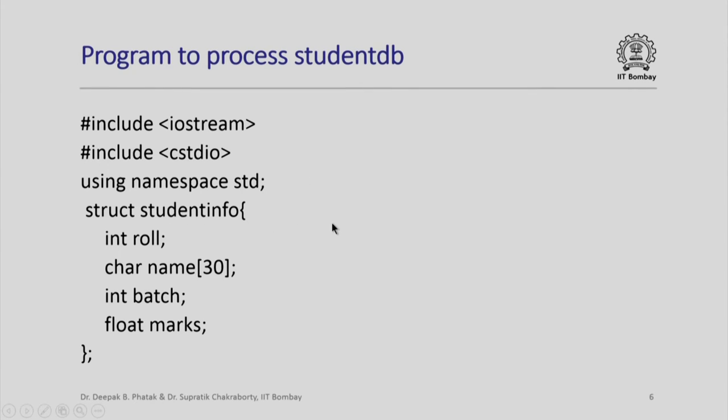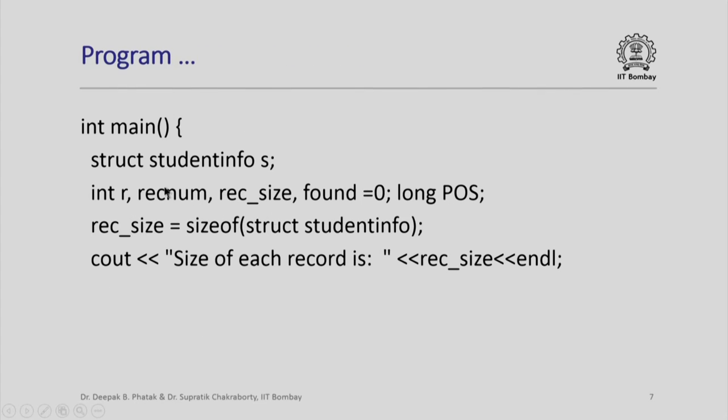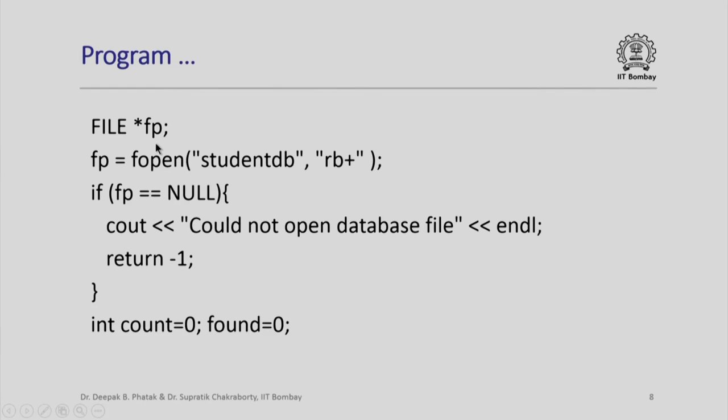We define the struct student info as before. We define a student info type variable s. These are the internal variables that we use. rec_size is the size of struct info and we know that this is the record size which would be read or written.